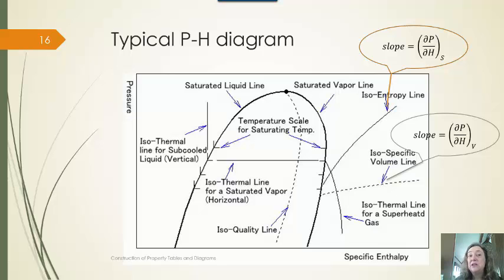And, again, if you wanted to know what the slope is of each of these lines so that you can take one known point and predict the next, then you're going to use, well, it's pressure versus enthalpy, so dp/dh at constant entropy, at constant volume, at constant temperature.